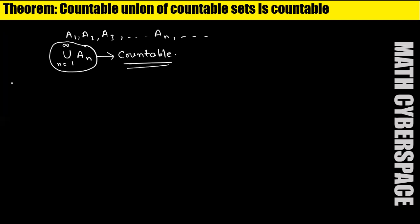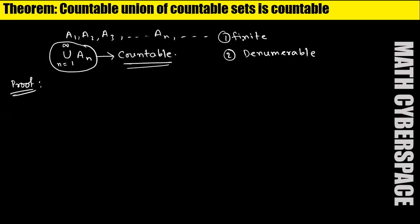Now, how can we prove this theorem? Proof: Here A1, A2, A3 are our sets. Since these sets are countable, we have two choices: either these sets will be finite, or the sets will be denumerable. If they are finite, then it is clear that the union will be countable. Now I am taking the case that these sets will be denumerable.